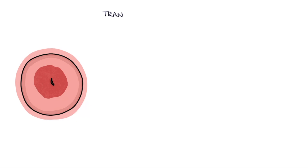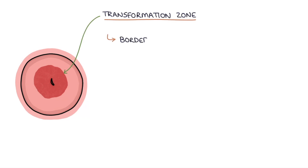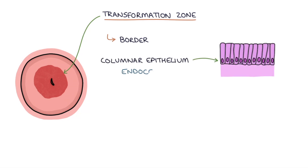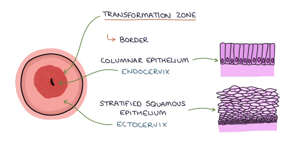Next, let's talk about the transformation zone. The transformation zone is the border between the columnar epithelium of the endocervix, or the canal, and the stratified squamous epithelium of the ectocervix, which is the outer area of the cervix visible on a speculum examination. When the transformation zone is located on the ectocervix, it is visible during a speculum examination as a well-demarcated border between the two epithelial types.